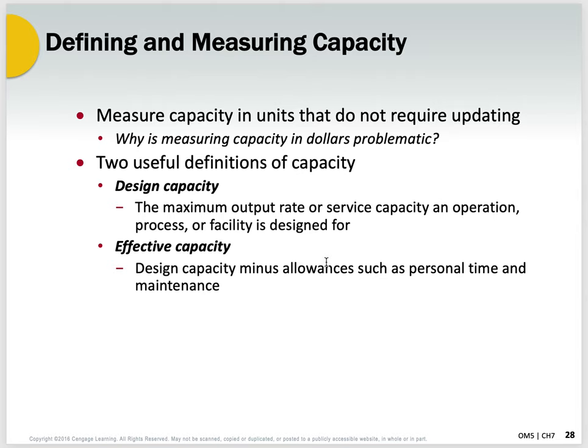Effective capacity is the design capacity minus the allowances such as personal time and additional maintenance. I would leave the design capacity based on a 24/7 operation and look at the effective capacity based on, for example, if we're only running one shift five days a week — so my effective capacity would be somewhat less than the design capacity.